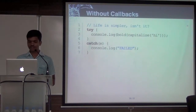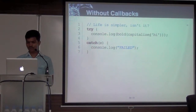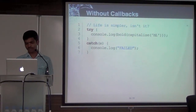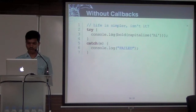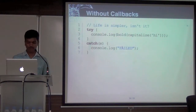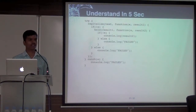In the synchronous world, this is how you do it. You see what I'm doing — inside I have a function called cap. Assume that cap is going to return whatever you're passing, and you're calling bold on that. You're actually trying to bold it, and again you're calling console.log. If any exception happens, you can catch it. This is in the synchronous world — everything looks good. But the same program, when you try to do it in the asynchronous world, it becomes complex.